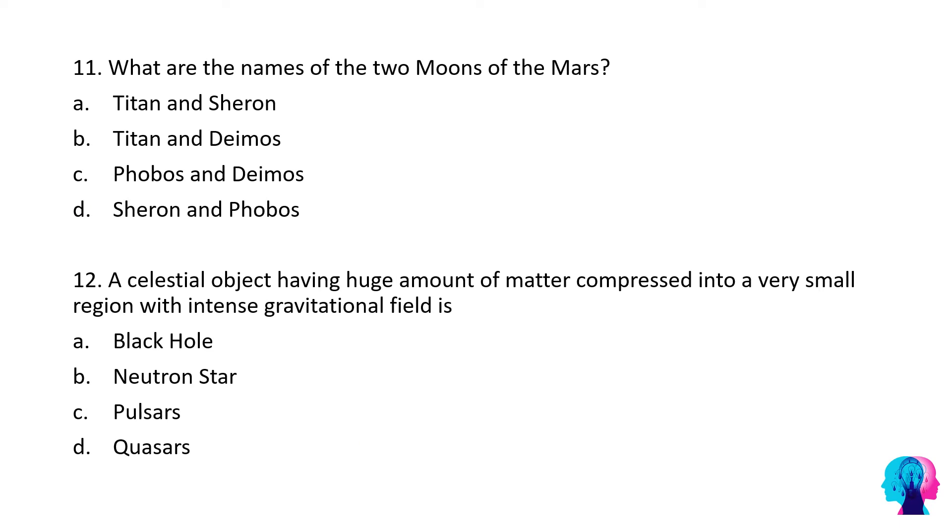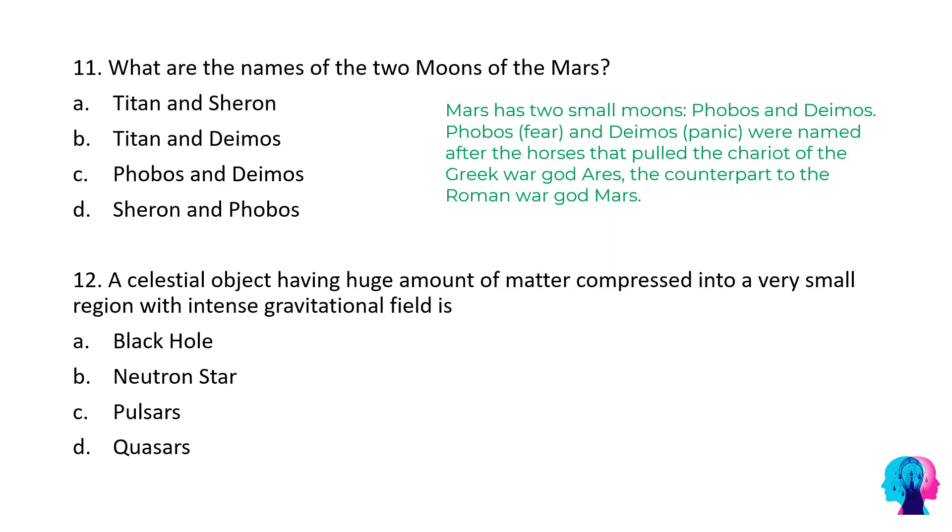Moving on to next question: What are the names of two moons of the Mars? The correct answer would be Phobos and Deimos. Mars has two moons: Phobos, meaning fear, and Deimos, meaning panic. These were named after the horses that pull the chariot of Greek war god Ares, the counterpart to the Roman war god Mars.